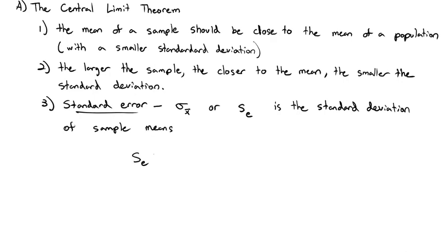And the way we calculate the standard error, or the standard deviation of the sample means, is we will take the standard deviation of the entire population, and we'll divide by the square root of the sample size. Or if it's a sample, we'll say s for the sample standard deviation divided by the square root of the sample size. And that's a key equation that we're going to use quite a bit today.